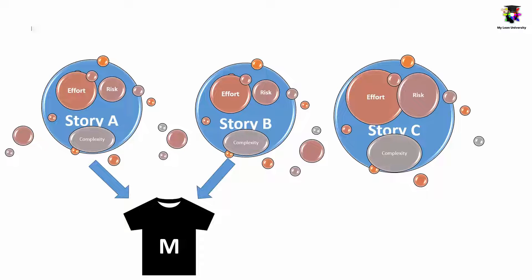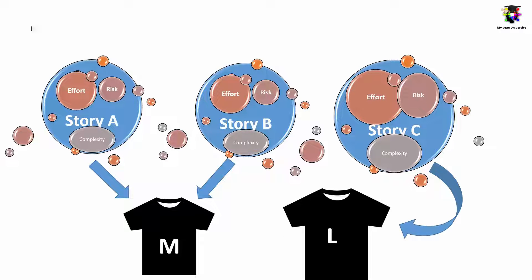The size assigning process is relative to each other. For example, if the function of complexity, effort, and risk or uncertainty for a backlog item is similar, it may be assigned a medium or M size. If another backlog item requires much larger effort, larger risk, and complexities, we can relatively assign it to a larger t-shirt group. So t-shirt sizing is relative to each other, which is the basic approach of every agile estimation technique. T-shirt sizing is relatively easy.